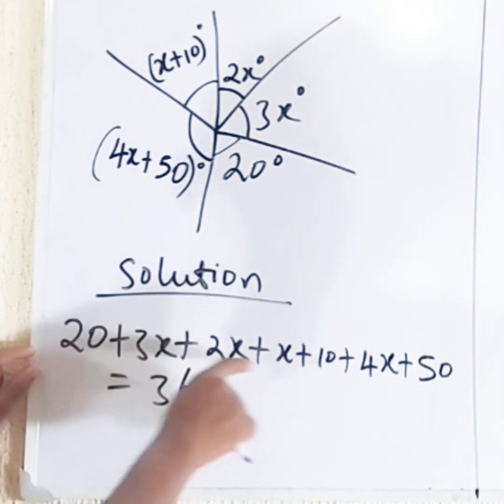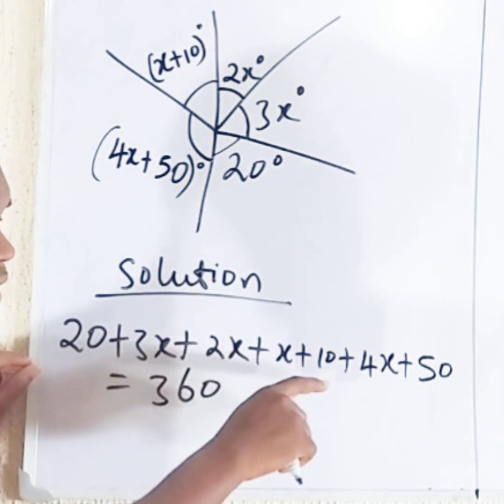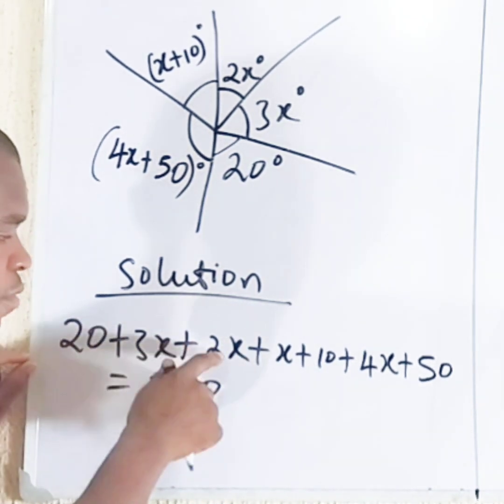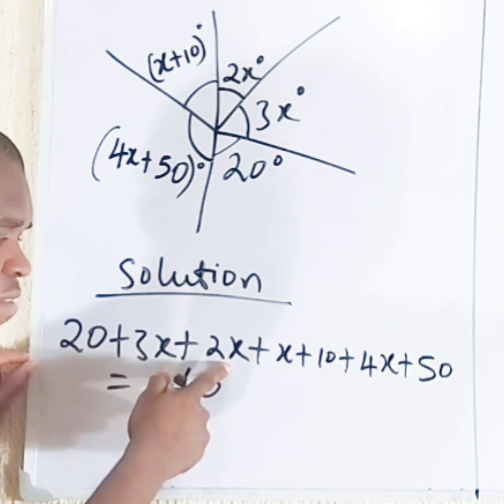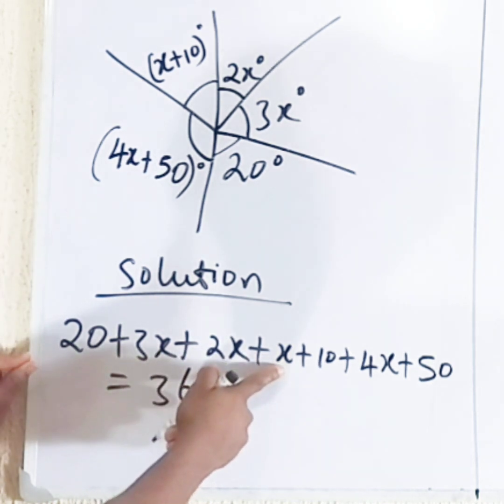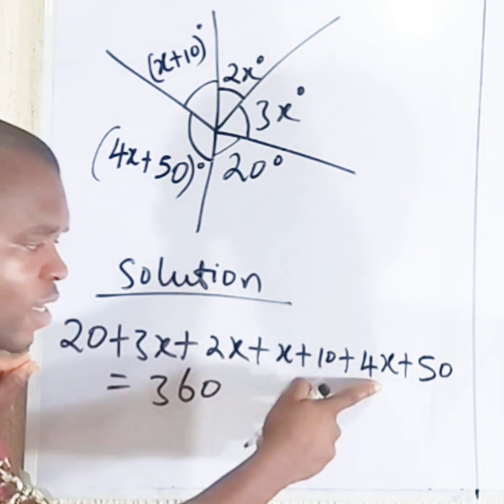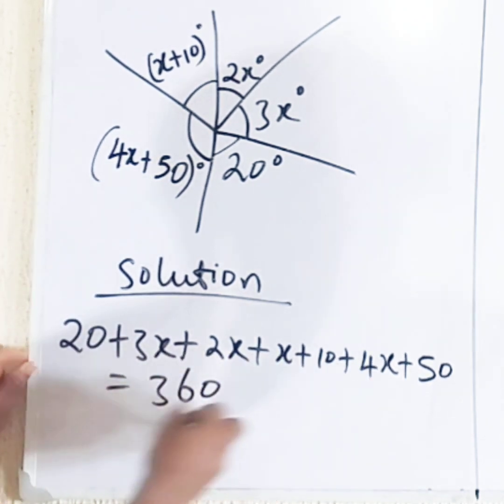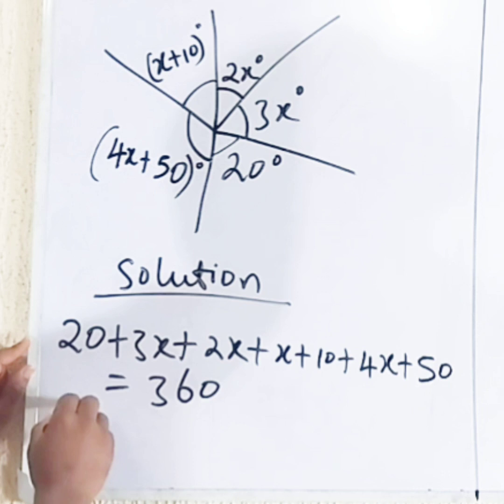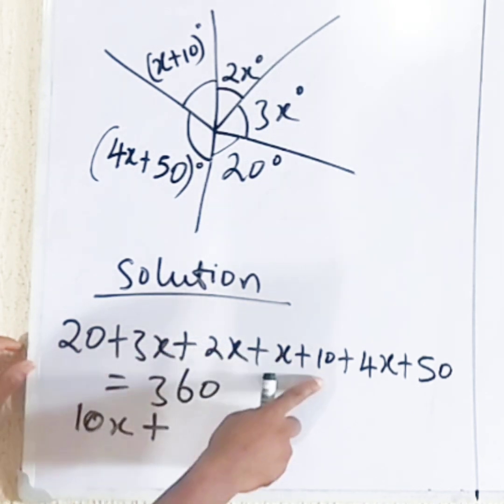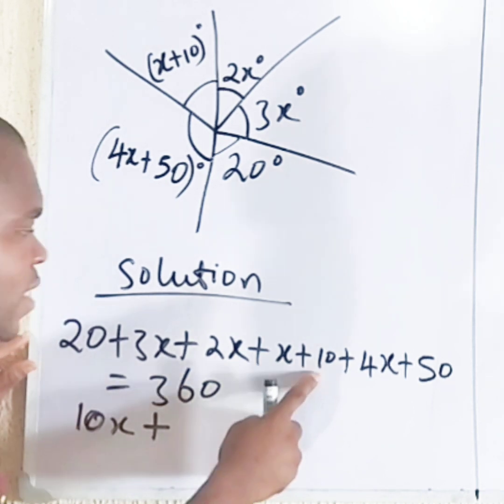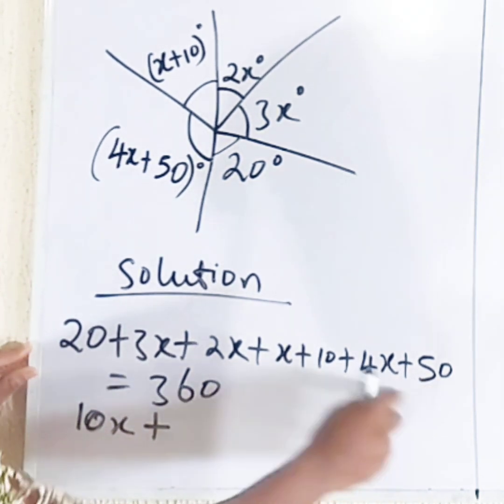So what we're going to do here is collect like terms. 3x plus 2x gives you 5x, plus 1x gives you 6x, plus 4x gives you 10x. 20 plus 10 gives you 30, 30 plus 50 gives you 80.